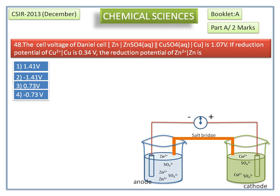Two electrons travel along the wire from anode to cathode, where reduction of Cu²⁺ ions takes place. The Cu²⁺ ions are reduced to copper, which is deposited on the copper electrode.